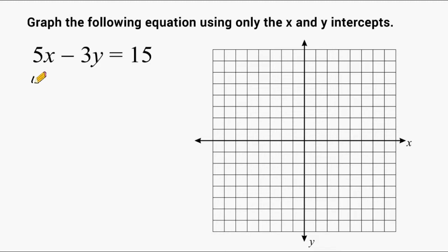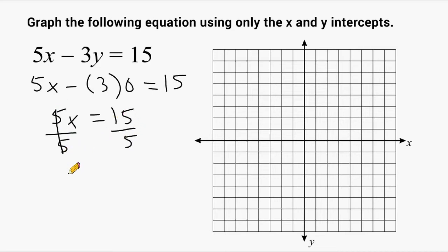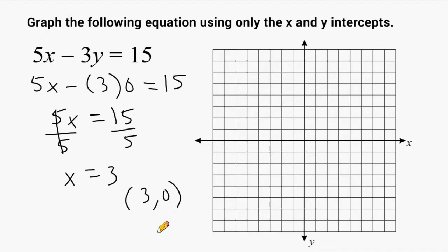Let's start by finding our x-intercept. To do that, we substitute zero in for y. So we rewrite the equation as 5x minus 3 times 0 equals 15. Now 3 times 0 is 0, so we can simplify this to 5x equals 15. We divide both sides by 5 to get x equals positive 3. This means that when the y-value is equal to zero, the x-value is equal to 3, so the coordinates of our x-intercept are (3, 0).